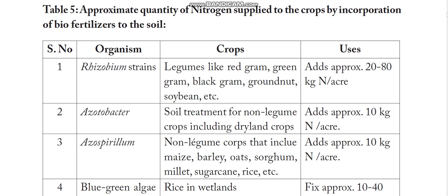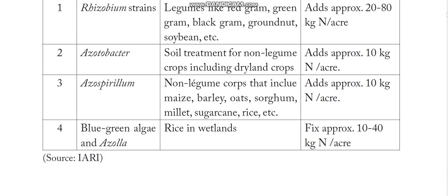Acetobacter, recommended for soil treatment for non-leguminous crops including dryland crops, adds approximately 10 kg of nitrogen per acre. Azospirillum, recommended for non-leguminous crops like maize, barley, oats, sorghum, millet, sugarcane, and rice, also adds 10 kg. Blue-green algae adds around 10 to 40 kg and is recommended for rice in wetlands. For rice, both Azospirillum and blue-green algae are recommended.